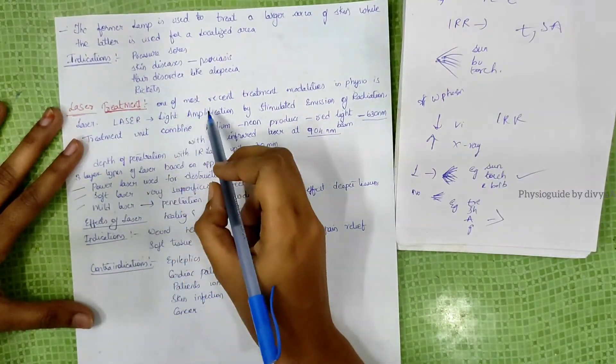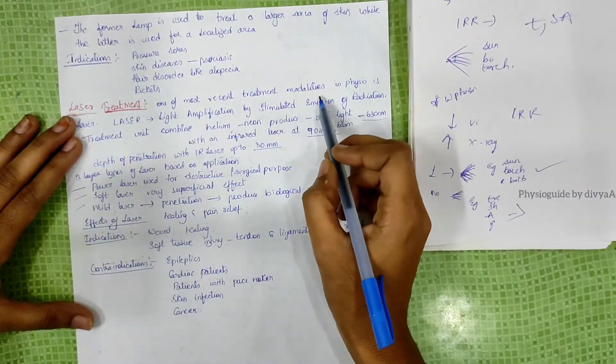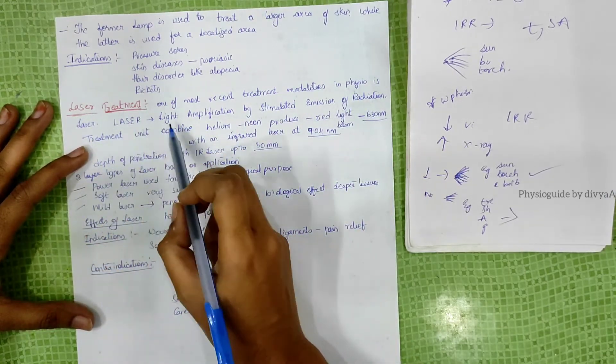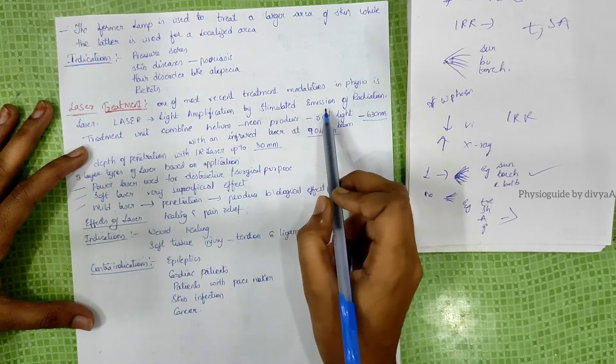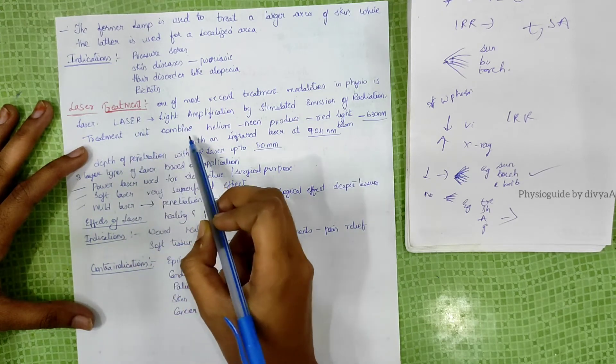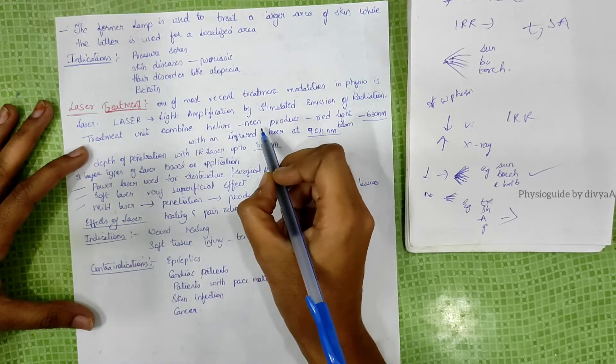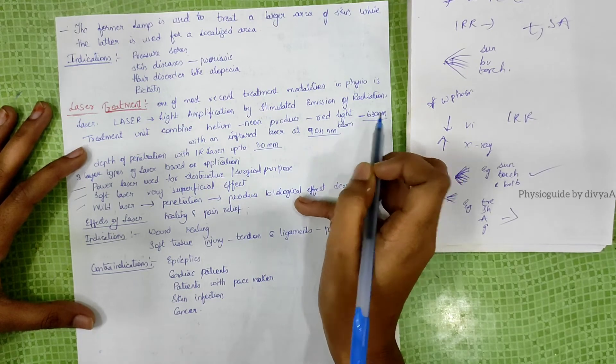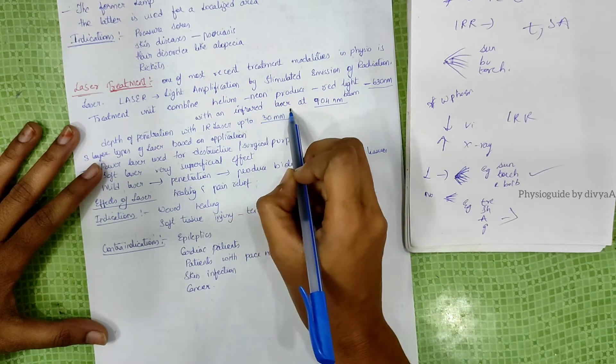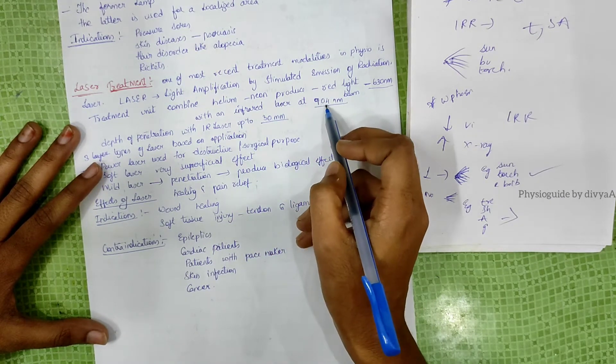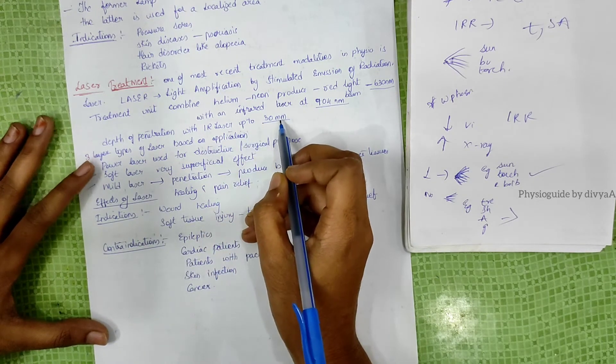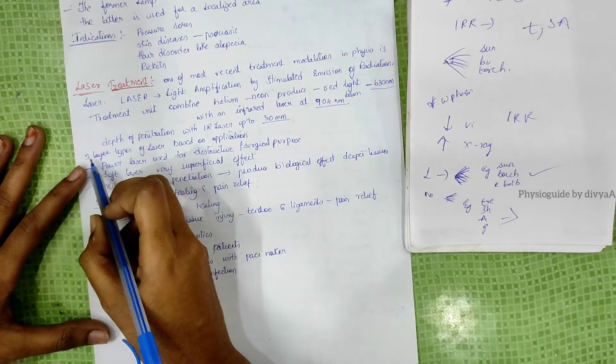Laser treatment is one of the most recent treatment modalities in physiotherapy. LASER is the acronym for Light Amplification by Stimulated Emission of Radiation. The treatment uses a unit combining helium-neon producing red light at 630 nanometers wavelength with an infrared laser at 904 nanometer beam. Depth of penetration with IR laser is up to 30 nanometers.